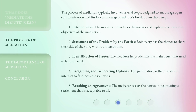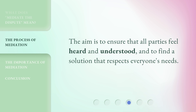The process of mediation typically involves several steps designed to encourage open communication and find common ground. Step 1: Introduction — the mediator introduces themselves and explains the rules and objectives. Step 2: Statement of the problem — each party shares their side of the story without interruption. Step 3: Identification of issues — the mediator helps identify the main issues to be addressed. Step 4: Bargaining and generating options — the parties discuss needs and interests to find possible solutions. Step 5: Reaching an agreement — the mediator assists the parties in negotiating a settlement acceptable to all, ensuring everyone feels heard and respected.